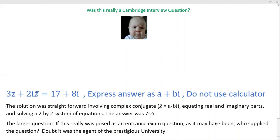But this most recent one that I've viewed on a popular YouTube channel as a Cambridge interview question was a very straightforward problem. It involved a complex number equation which involved a conjugate, and they wanted you to write your answer in the form A plus Bi and do not use a calculator. And that's all.